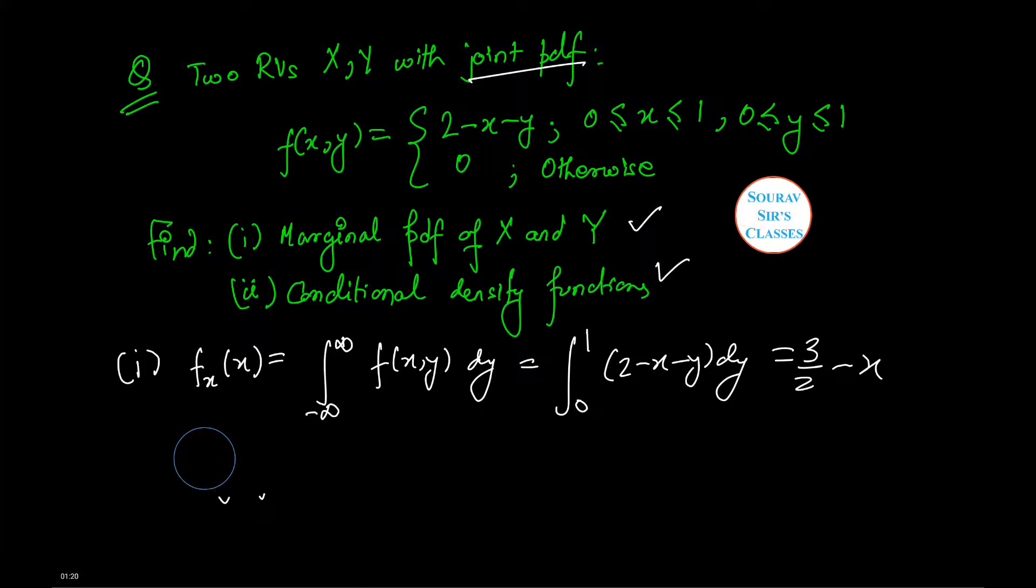Rather let us first write this in equation form. fx is equal to 3 by 2 minus x when x lies between 0 to 1 and 0 otherwise.